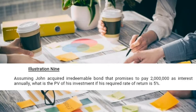Assuming John acquired an irredeemable bond that promises to pay 2 million as interest annually. That 2 million is our annuity, so A equals 2 million. The present value of his investment is required given that his required rate of return is 5%, so our interest rate I is 5%.